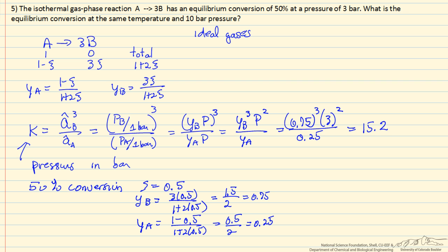Remember this is a constant, does not change with pressure. Now we can write the equilibrium constant again in terms of these mole fractions, but now we'll leave it in the general form here because we're going to solve for a new extent of reaction. So we have 3 times the extent of reaction cubed, pressure squared, over 1 plus 2 times the extent of reaction.